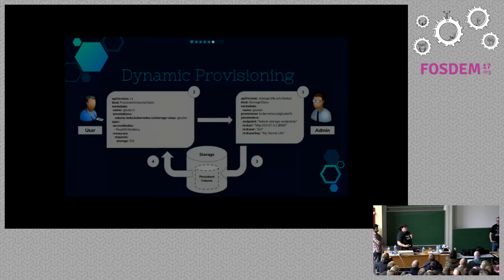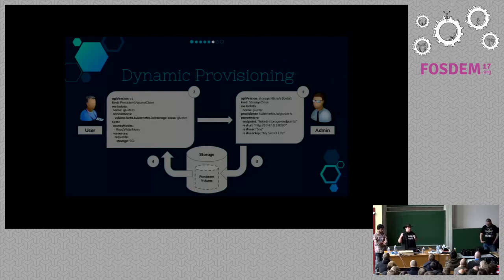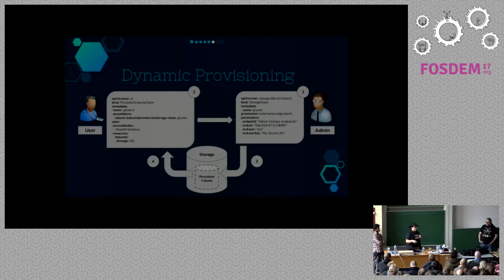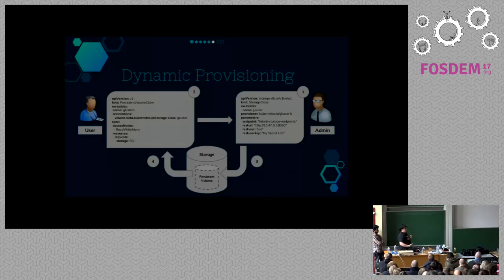We also allow for dynamic provisioning, if you're familiar with that in Kubernetes. The administrator on the right provides a storage class which defines that applications can use some underlying storage. The admin manages that by specifying an endpoint that tells it where to get access to the GlusterFS pods, and a REST URL that points to the Heketi REST interface. After that, the user on the left only needs to know the name of the storage class — in this case, Gluster. When you create your persistent volume claim, it gets attached to the storage class and dynamically creates a Gluster volume on your Gluster storage. That then gets attached to the PVC and can be used by a Kubernetes application.